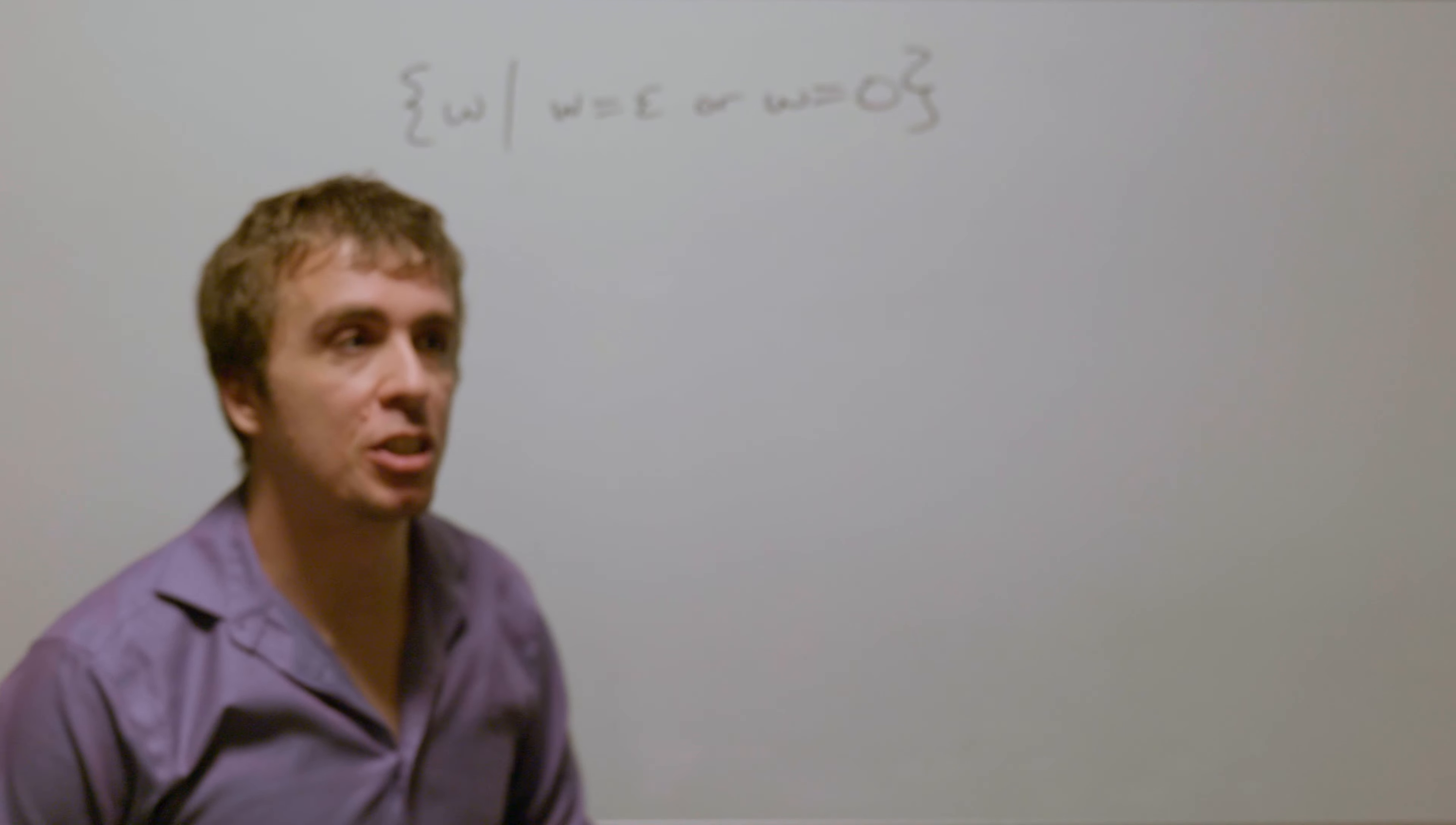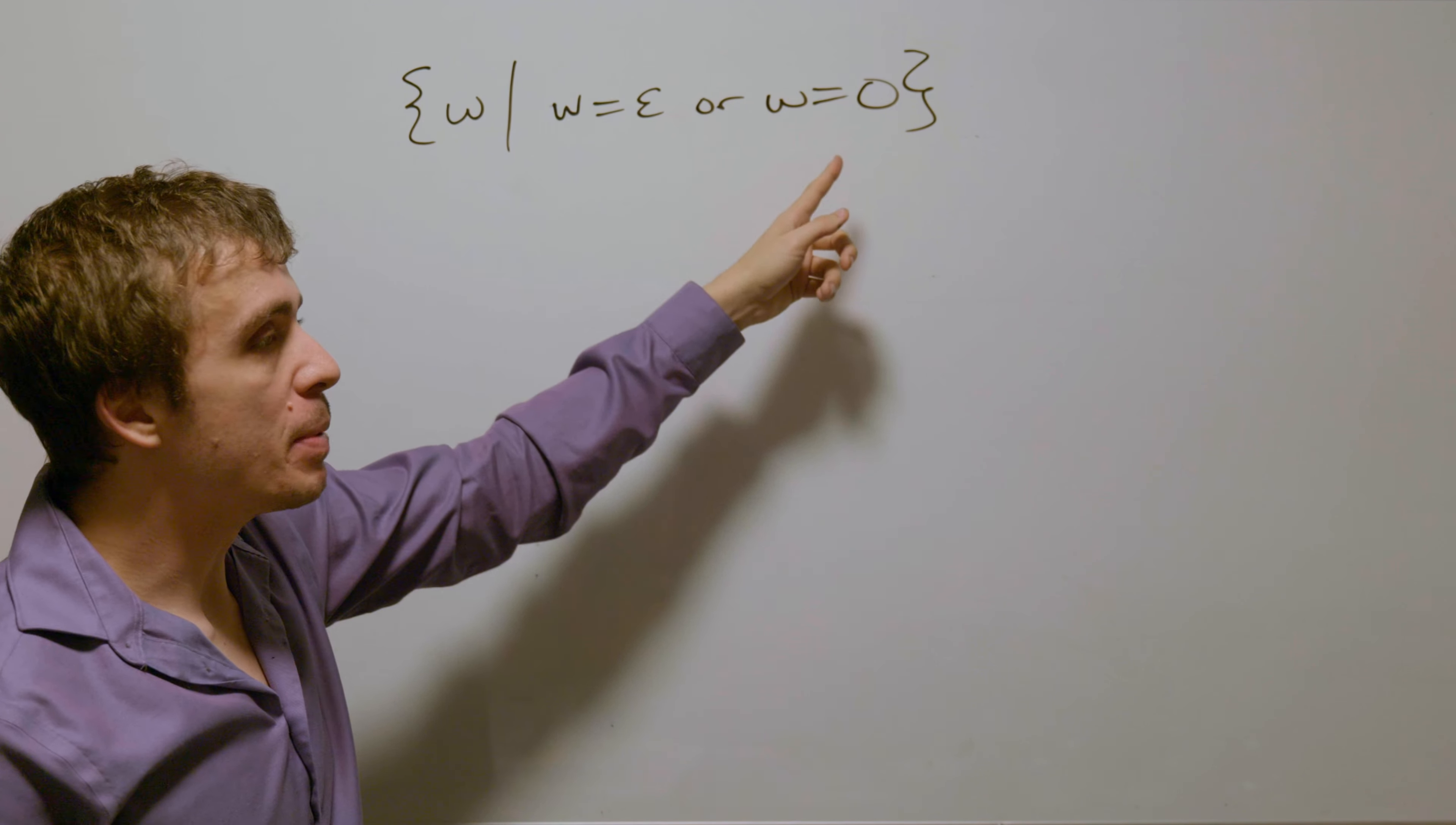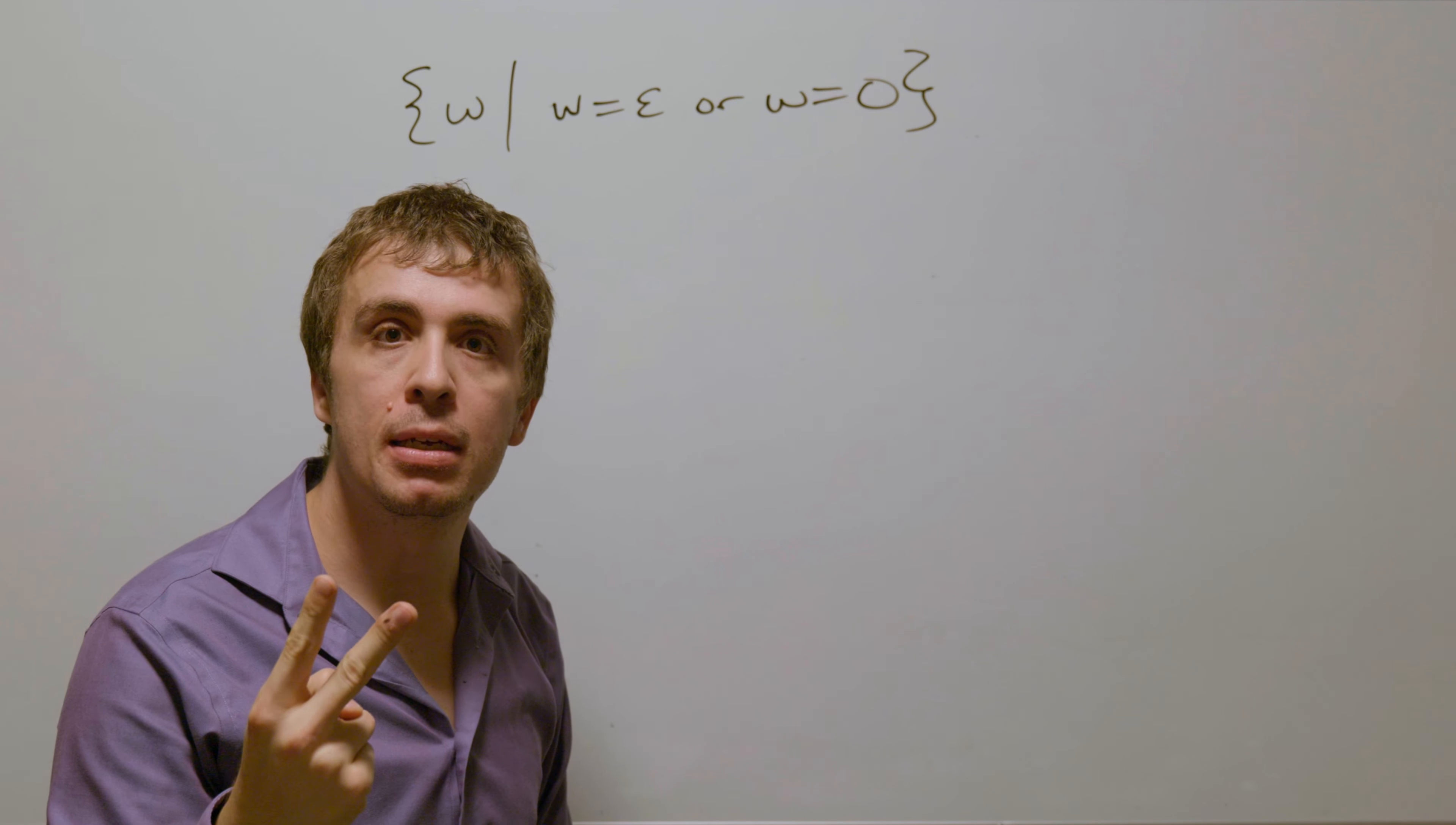Okay, let's make a deterministic finite automaton for this language, which is the set of all binary strings w, such that either w is the empty string, or w is the string which only contains a zero. So this is a very tiny language with only two strings in it.